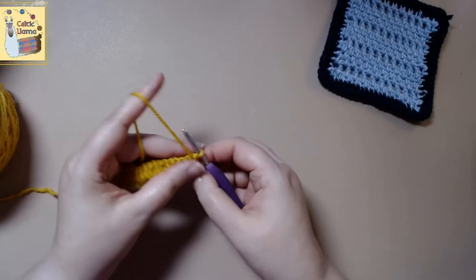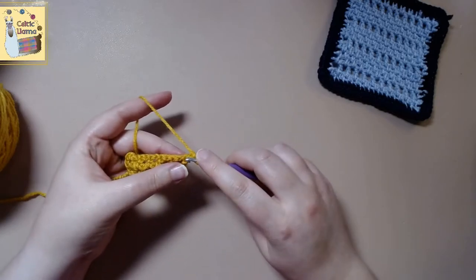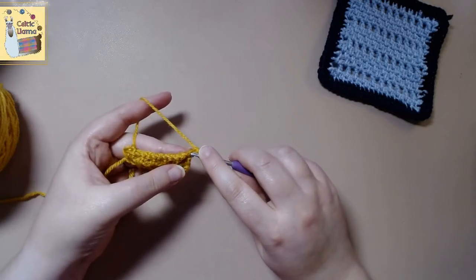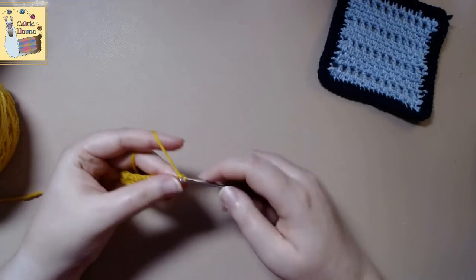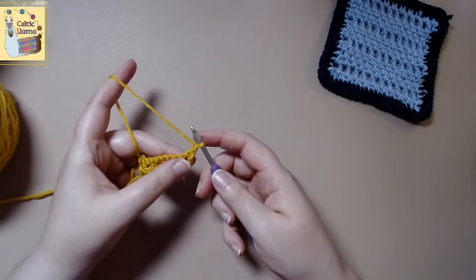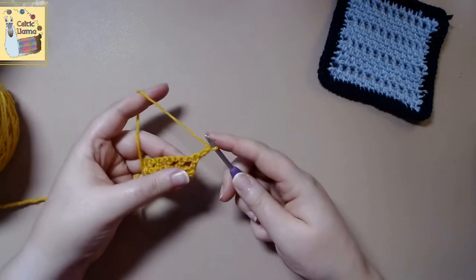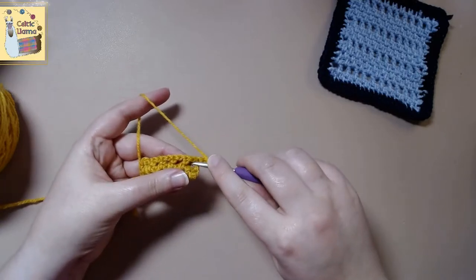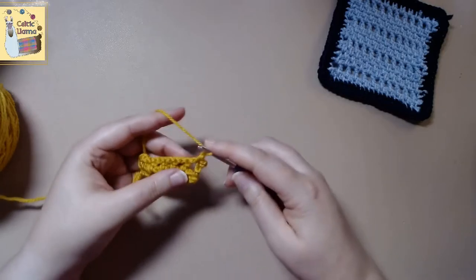So row three we will turn our work and chain one. And we will repeat exactly like with row one. And I'm showing you here, this is what happens if you end up going into the wrong stitch. It'll end up bunching your work and it won't look right. So you always need to make sure that you do your chain one and single crochet into the chain one gap from below.